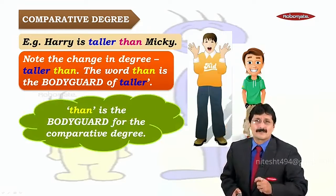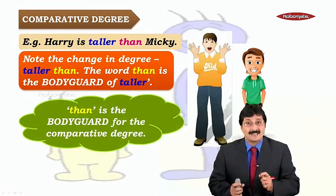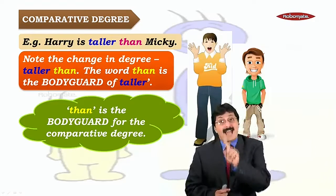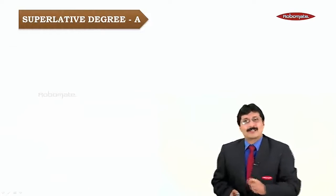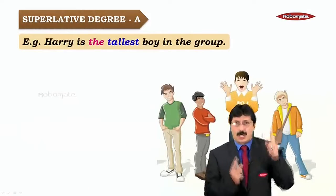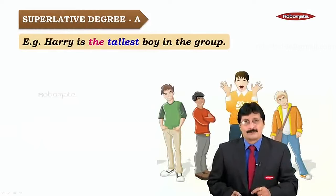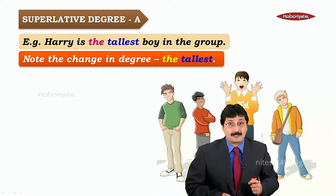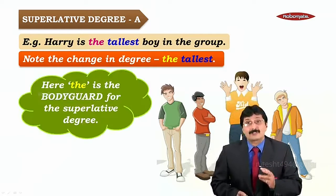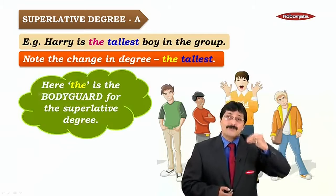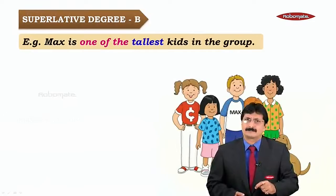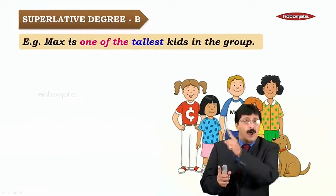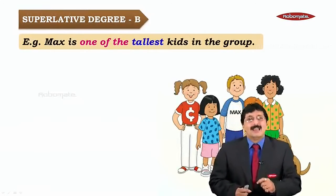Coming back to this — can you see the bodyguard here? For the positive degree the bodyguard was 'as...as,' and for the comparative the bodyguard is 'than.' Let's have a look at the superlative: 'Harry is the tallest boy in the group.' The EST has been added to the adjective, and 'the' is the bodyguard for the superlative degree.